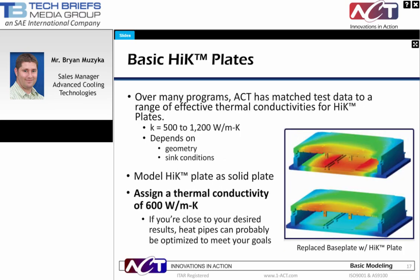Looking at high-K plates, a similar approach can be used. You don't have to model each individual heat pipe or figure out a complete layout when using high-K plates. As discussed earlier, test results have shown a 500 to 1200 watts per meter K thermal conductivity for high-K plates. To quickly model high-K plates, simply replace your aluminum or base material conductivity with 600 watts per meter K. If you get favorable results, that's something we can usually achieve with an optimized heat pipe design.